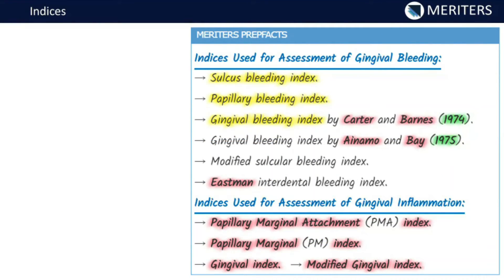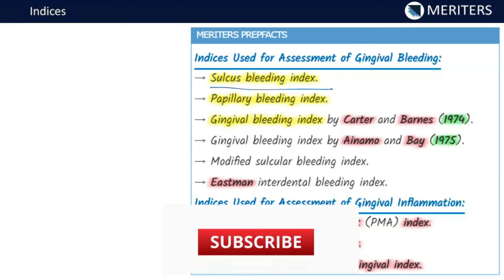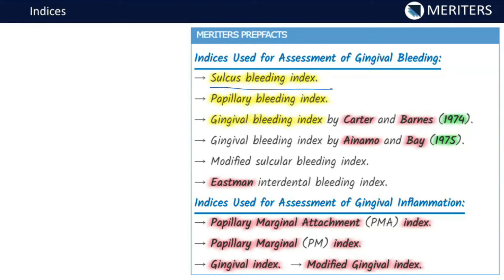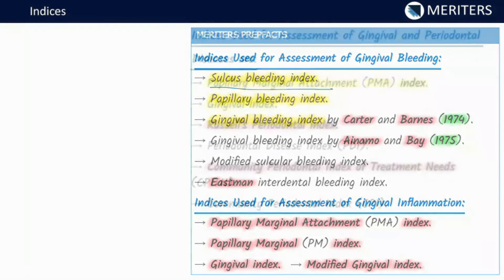Indices used for measurement of gingival bleeding include the Sulcular Bleeding Index, Papillary Bleeding Index, Gingival Bleeding Index by Barnes and Lister 1974, another Gingival Bleeding Index by Hock, Inamo, and Bay in 1975, Modified Sulcular Bleeding Index, and the Eastman Interdental Bleeding Index. Indices for assessment of gingival inflammation include the Papillary Marginal Attachment Index, Papillary Marginal Index, Gingival Index, and Modified Gingival Index.